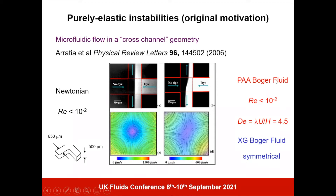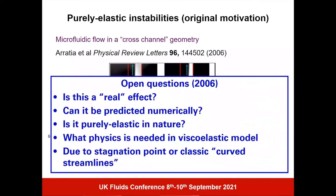The effect depended on the polymer used. Polyacrylamide, a highly flexible linear polymer, showed this instability, while xanthan gum — which you've probably eaten in tomato ketchup as a thickener — is much more rigid and less elastic, and remained symmetric over the conditions they could reach. The open questions when they published this were: as experimentalists often ask, are you sure the geometry is exactly symmetrical? Are the flow rates exactly right? Is this a real effect?